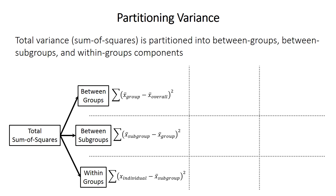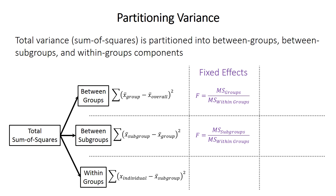Nested ANOVA starts with the general ANOVA approach of partitioning variance — or sum of squares — into different components: between groups, between subgroups, and within groups. Then F-statistics are calculated as in regular or factorial ANOVA, but the calculation depends on whether you have fixed or random effects. If subgroups are fixed effects, the F-statistic for the main group is the between-groups mean square divided by the within-groups mean square, and the F-statistic for the subgroup is the between-subgroup mean square also divided by the within-groups mean square. If subgroups are random effects, the F-statistic for the main groups is the between-group mean square divided by the between-subgroup mean square.